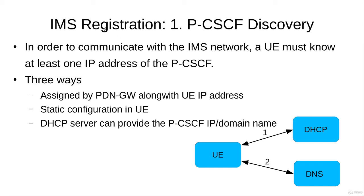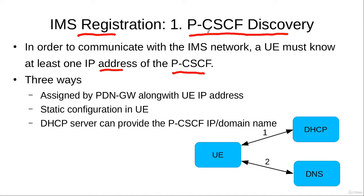When a user equipment wants to register itself with the IMS network, the first step is the proxy call session control function discovery. The proxy call session control function is the point of contact of the user equipment with the IMS network. In order to communicate with it, the user equipment must know at least one IP address of the proxy call session control function, and the procedure of discovering this IP address is called the proxy call session control function discovery.